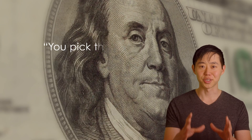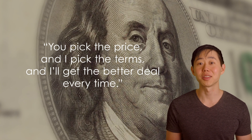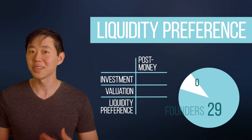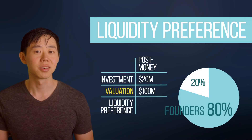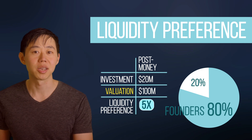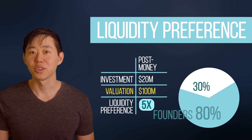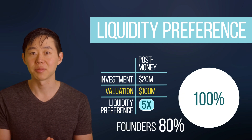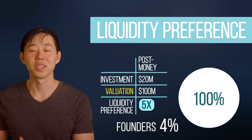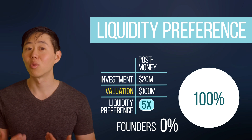In recapping the economics of a deal, the thing to remember is that price isn't everything. There's a saying: you pick the price and I pick the terms, and I'll get the better deal every time. For example, say you raised $20 million at a $100 million valuation. If you agreed to a 5x liquidation preference and your company sold for $100 million, your investors would be entitled to 5x their investment — all $100 million — and you wouldn't have a single dollar. That's why you have to pay attention to more than just price.